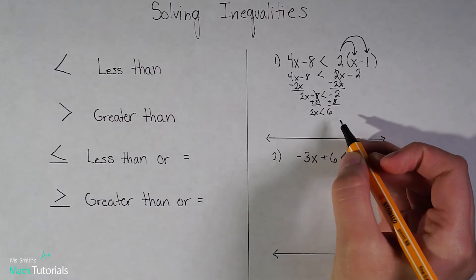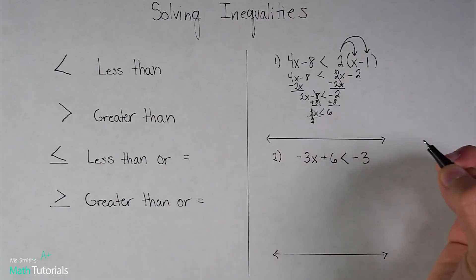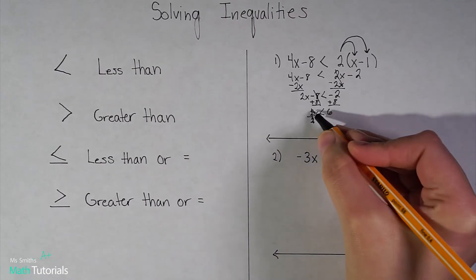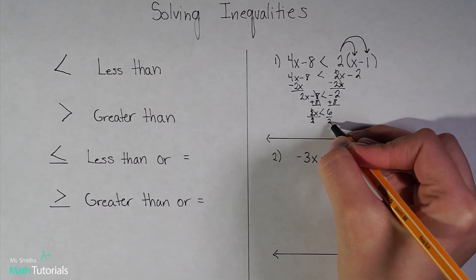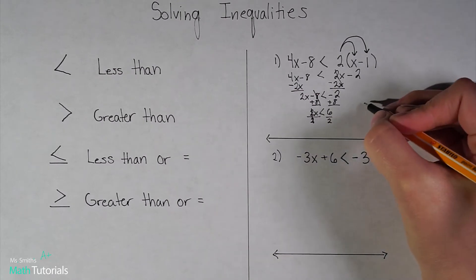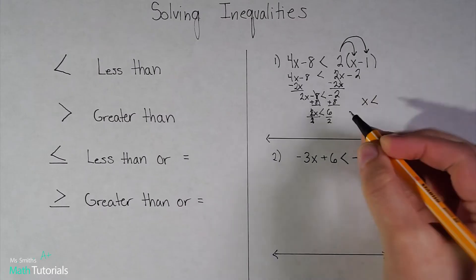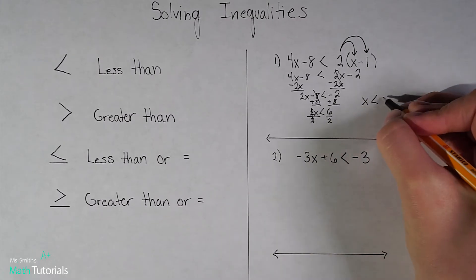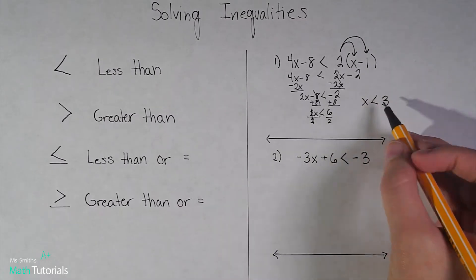My last step is to isolate x — divide by whatever's in front of it so those cancel to 1. I want to do the same thing on the other side. So x is less than 6 divided by 2, which is 3.